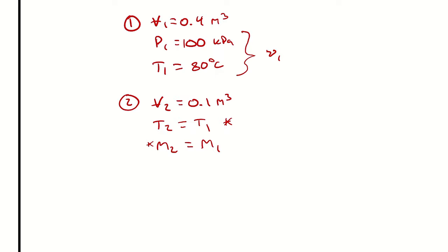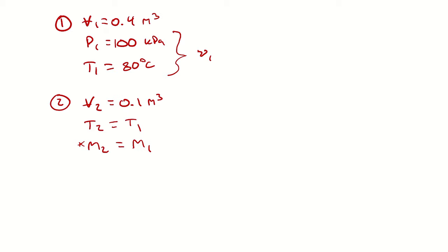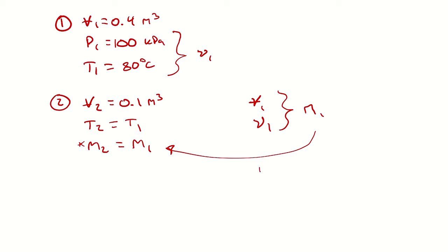We don't have specific volume directly, but we can get to specific volume 2. We know the volume goes from 0.4 to 0.1. If I know the volume and the specific volume at state 1, I could come up with mass. The mass at state 1 gives me the mass at state 2, and using mass and total volume at state 2 I could come up with specific volume at state 2.